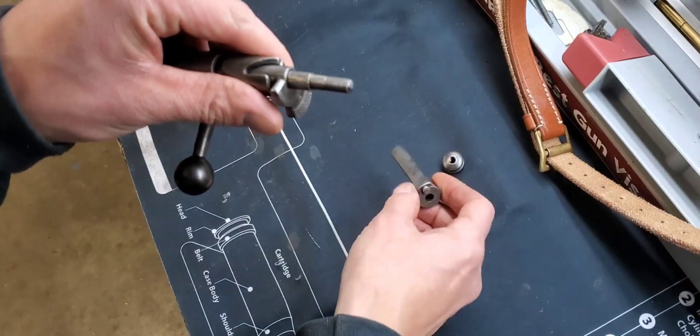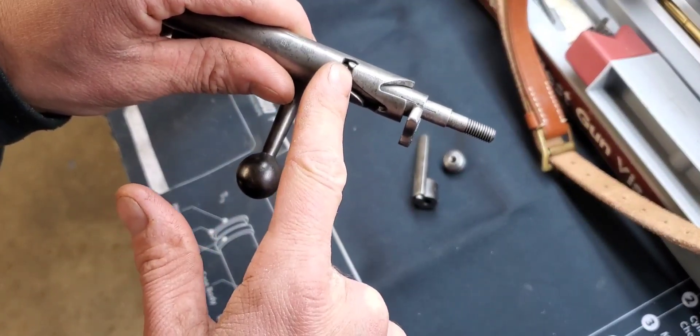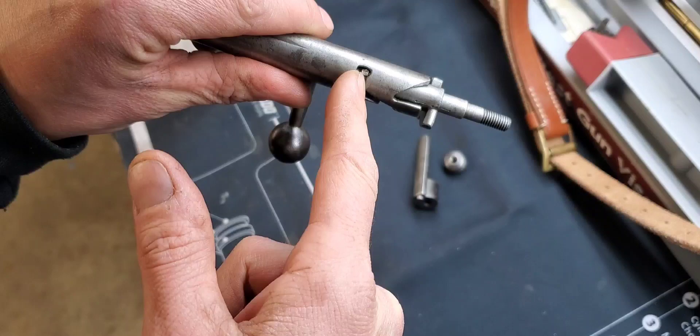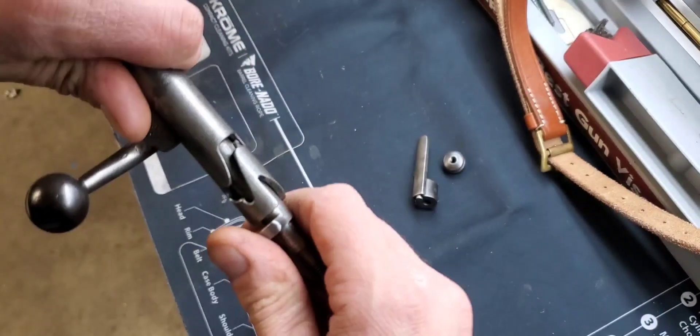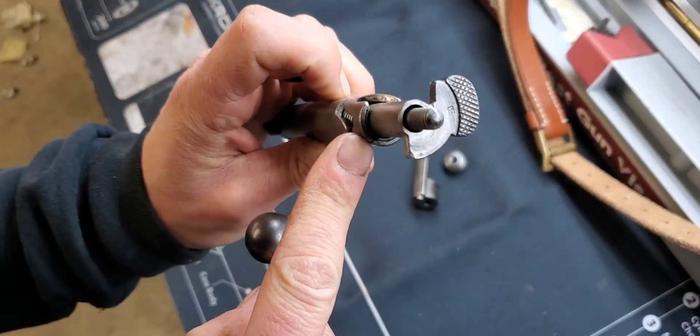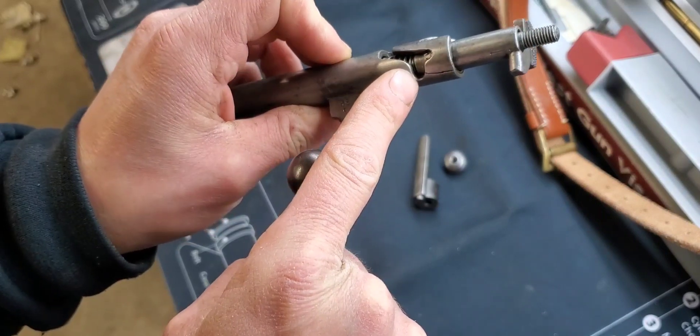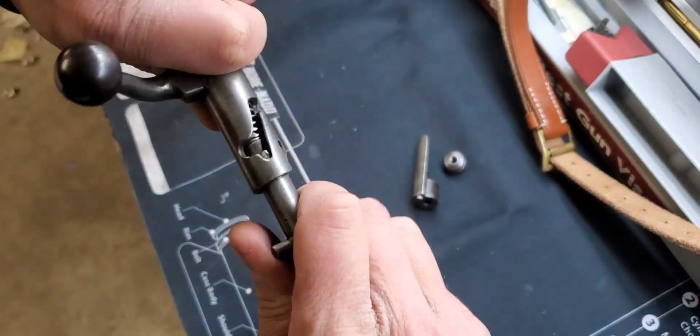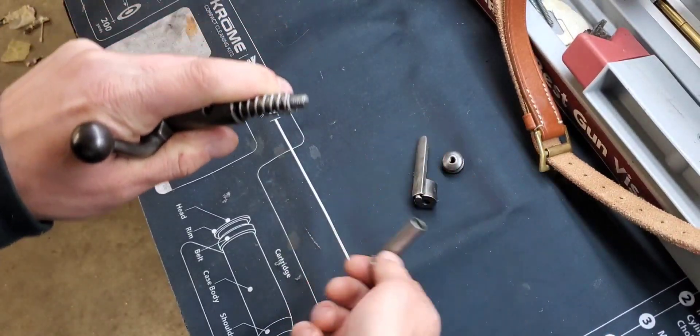We're gonna go ahead and take our cocking piece off. This is our safety piece. We're gonna bring this little nipple into this groove here just to hold it there, and then you'll see there's a little notch here. You're gonna bring this nipple down into here and be careful because this is spring-loaded. Keep it away from your face and that's gonna come right out.